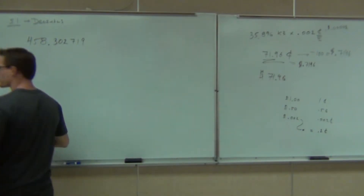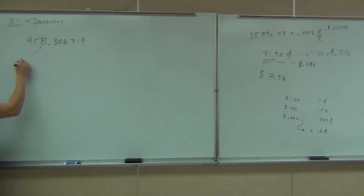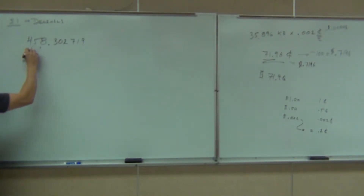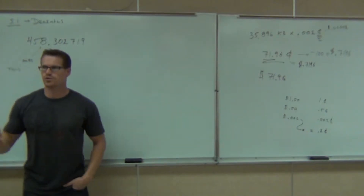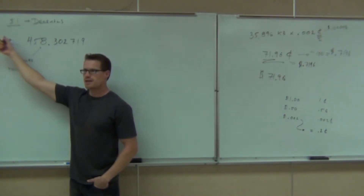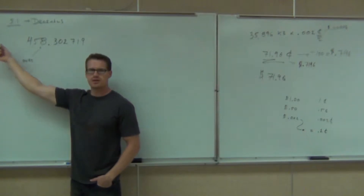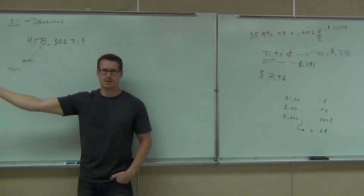Do you remember what this place value is? Ones. Tens. So on and so forth — we go hundreds, thousands, ten thousands, hundred thousands, then millions, and so on. We did that a while back, actually.